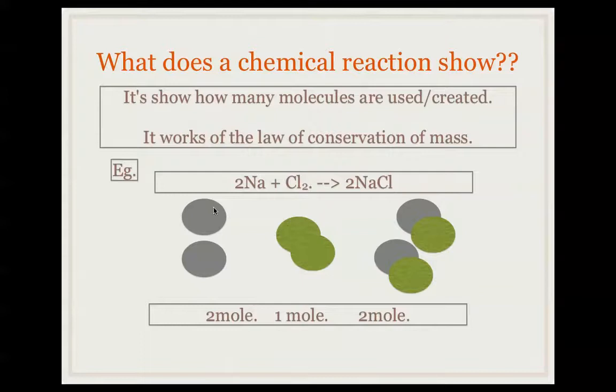Our two sodiums, just simple grey metals, our chlorine is a yellowy-green gas. When these two react, you get two sodium chlorides bonded together. That means we have two moles of our sodium. We'll react with one mole of chlorine to give two moles of sodium chloride. And it's this ratio of two to one to two that we use in stoichiometry.